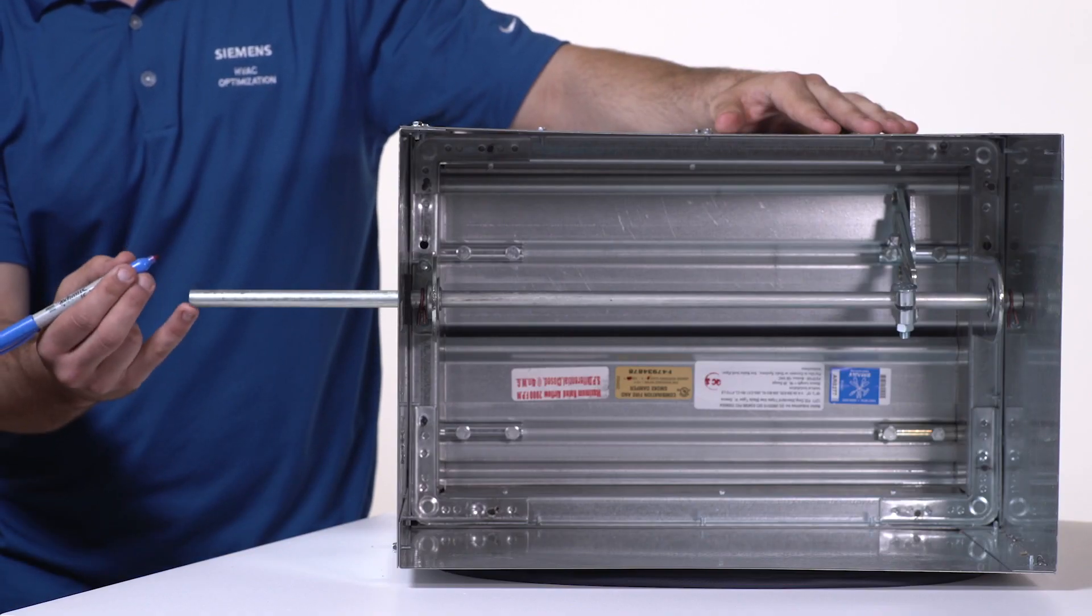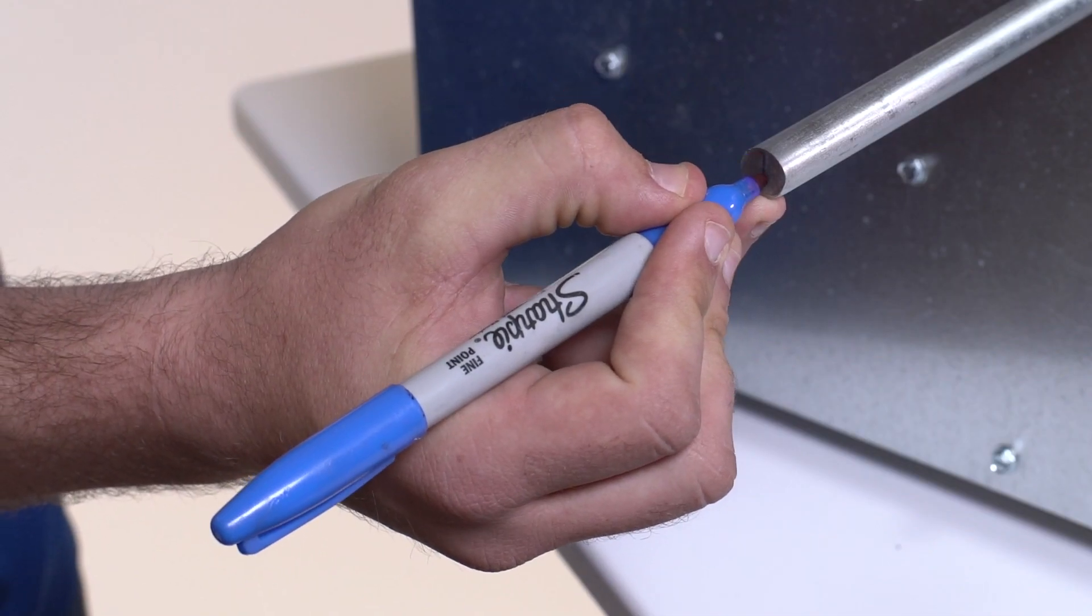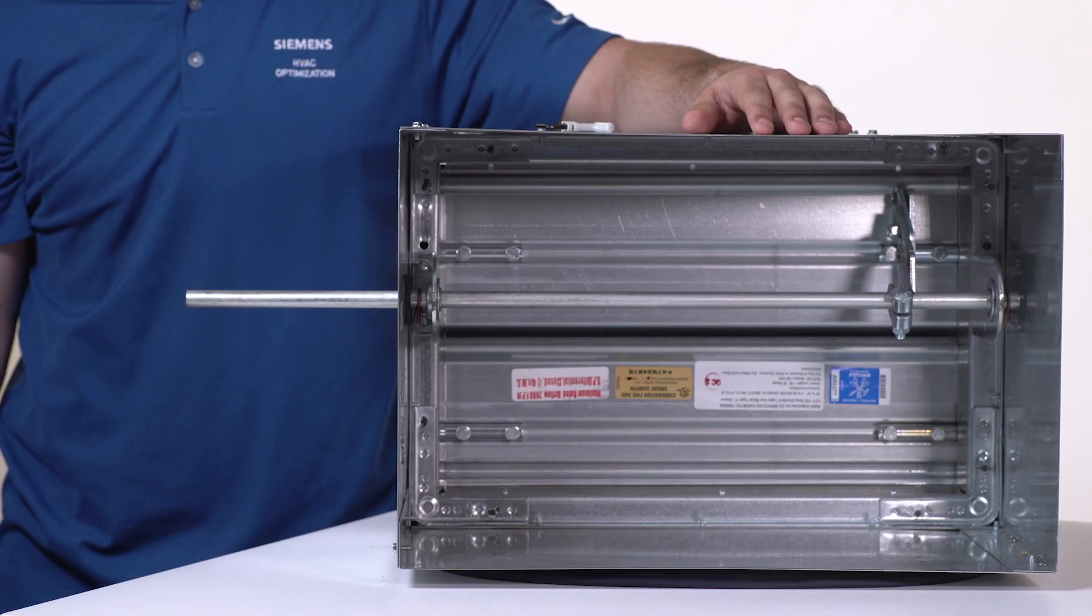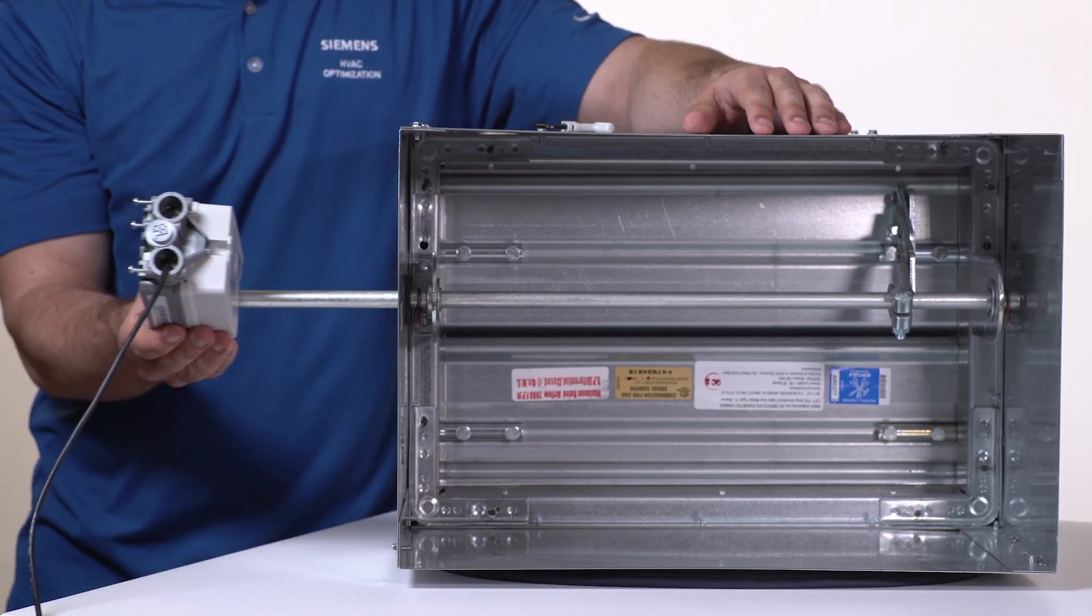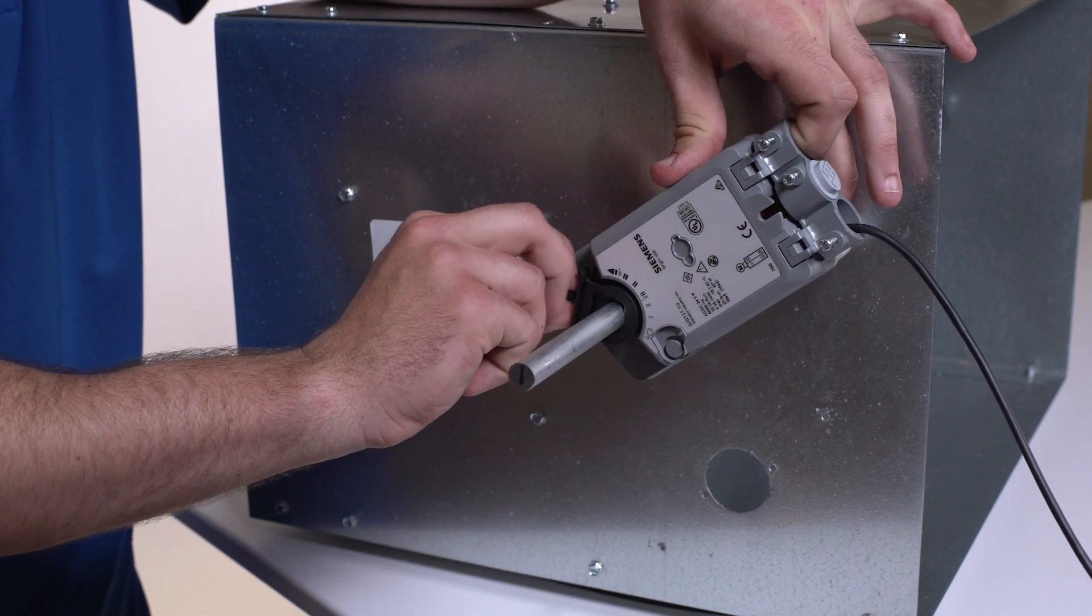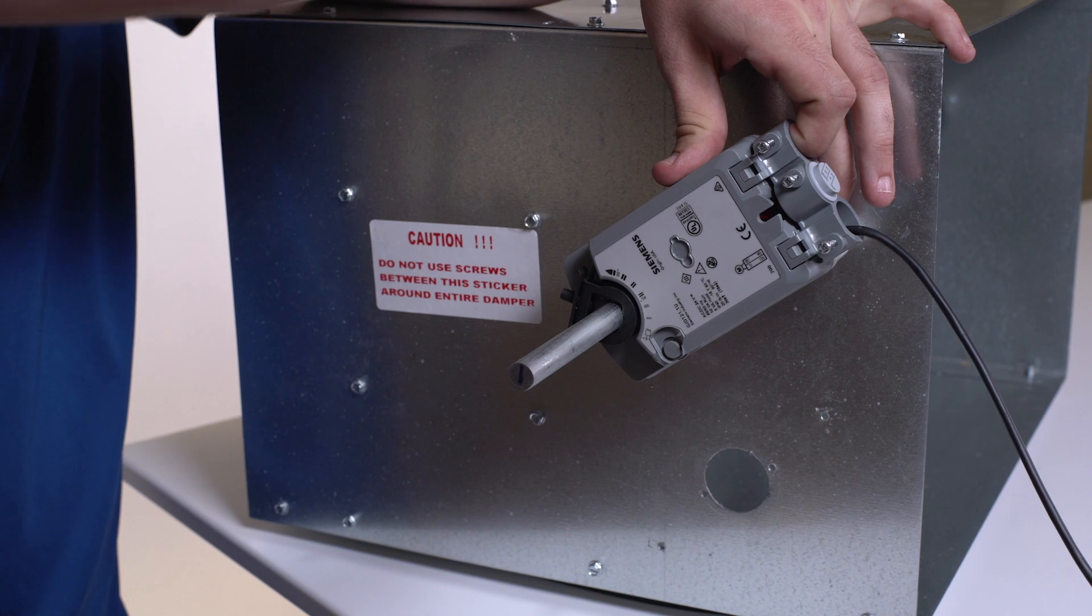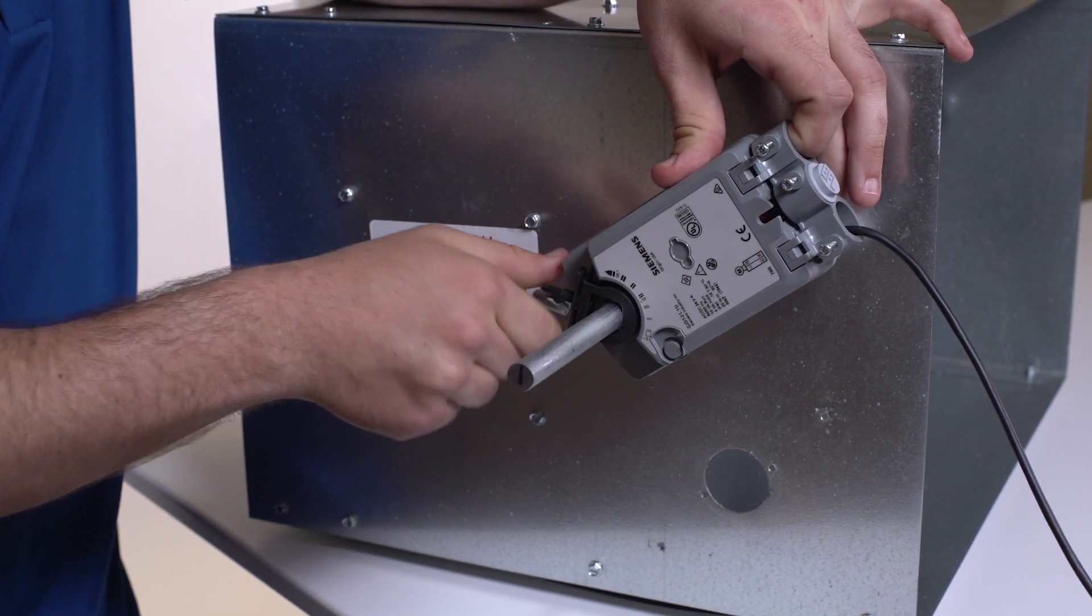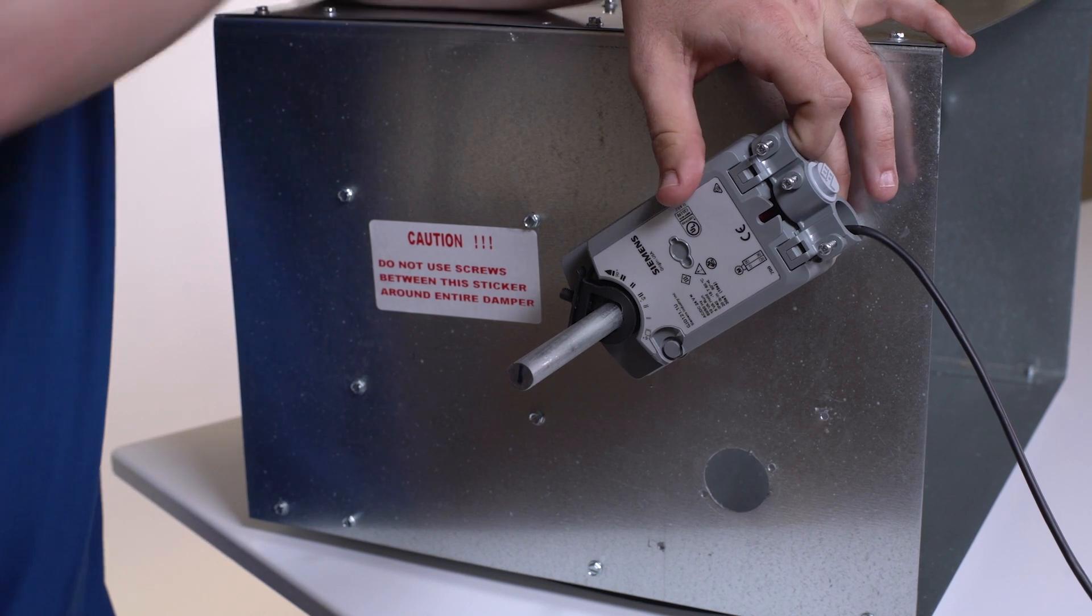Mark the shaft center line for a visual indication of the position either open or closed. Place the actuator on the shaft and tighten by hand to the specified torque. The self-centering jaws provide a secure no-slip connection and eliminate side loading.